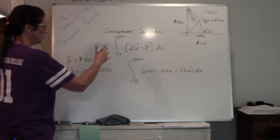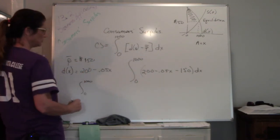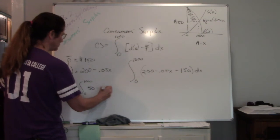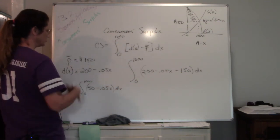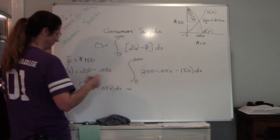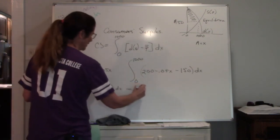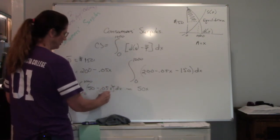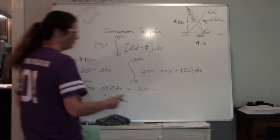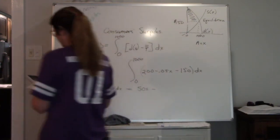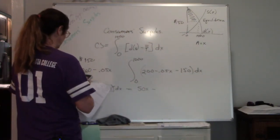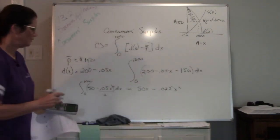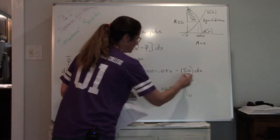We simplify the integrand: 200 minus 150 is 50, so we have the integral from 0 to 1000 of (50 minus 0.05X) DX. Now we find the anti-derivative: the anti-derivative of 50 is 50X, and for 0.05X we add one to the exponent and divide by the new exponent — 0.05 divided by 2 is 0.025 — giving us minus 0.025X squared. Evaluate from 0 to 1000.